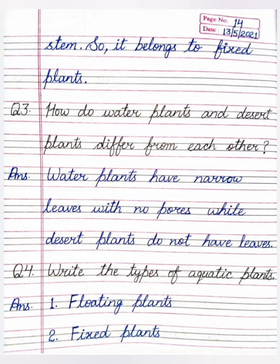Our next question is: how do water plants and desert plants differ from each other? Water plants aur desert plants mein farq yeh hai ke desert plants mein do leaves hain.